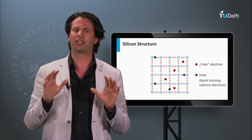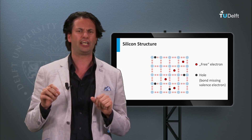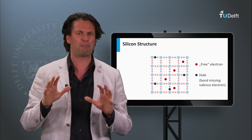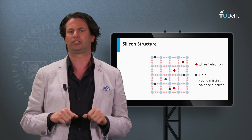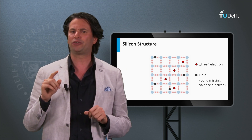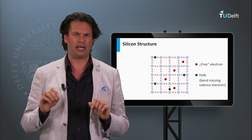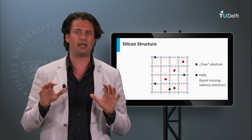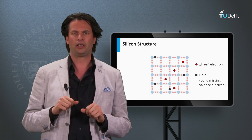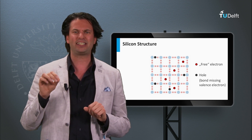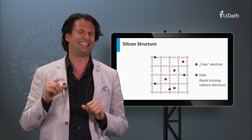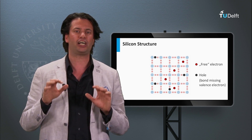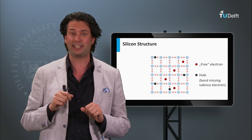Another approach to increase the density of charge carriers is using doping. Up to now we have considered pure semiconductor materials without any impurities — these are called intrinsic semiconductors, meaning the density of mobile electrons and holes are the same. We can intentionally incorporate impurities in the material; this is called doping. Doping can have a significant effect on the charge carrier density.